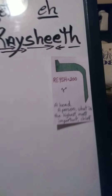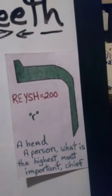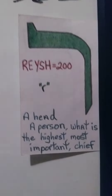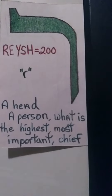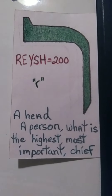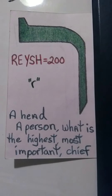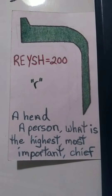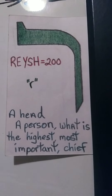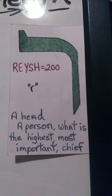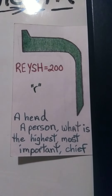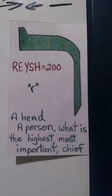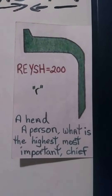Now if you look at this word, it says 'a head' — you see a head, two heads. It says a person, you see two. And it says: what is the highest, most important? Chief. The head of the person is the highest, the most important, the chief. That's what it's talking about — the person's head. Your head is the highest, my head is the highest. Anyone watching this, it's saying your head is the highest, the most important, the chief.